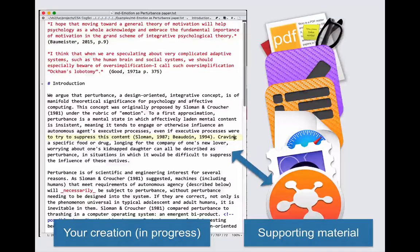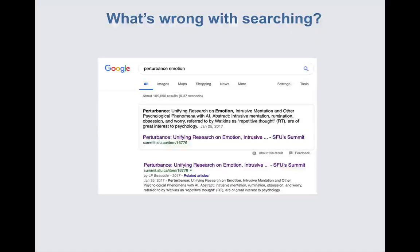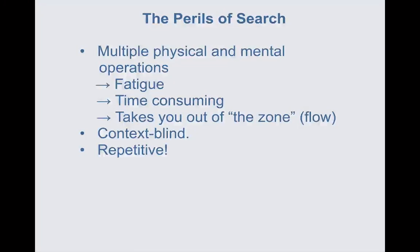And you might want to create a mind map as you're writing a document. Now to stay in flow, you need to quickly access the information related to your focal task. The problem is that search tools and task switchers are not designed to help you navigate between documents — they require too many steps. You need to invoke the app, click, type, read the search results, maybe scroll, click again. So basically these context-blind tools repeatedly take time, tire you out, and take you out of the zone.